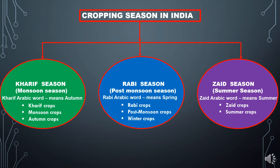The second season is Rabi season, which is also known as the post-monsoon season. Rabi is also an Arabic word which means spring, since the harvesting season coincides with the beginning of the spring season. The crops grown under Rabi season are known as Rabi crops, post-monsoon crops, or winter crops.